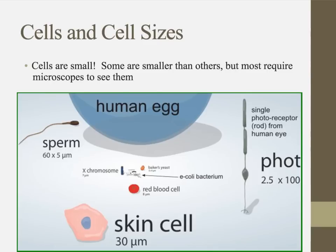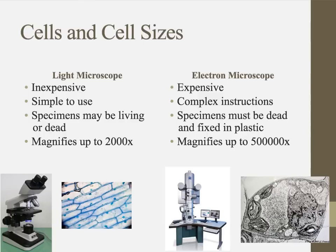Now, cells are really small. They come in a variety of sizes, ranging from really small bacterial cells to bigger human egg cells. For the most part, cells need microscopes in order to be viewed — they're so small we can't see them with the naked eye. The human egg is maybe about the size of a dot on a piece of paper, but any other kind of cell is really, really small.